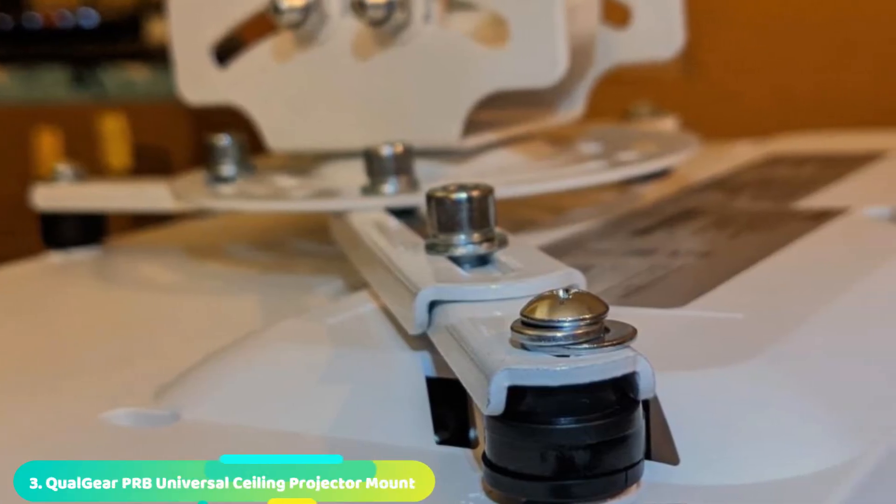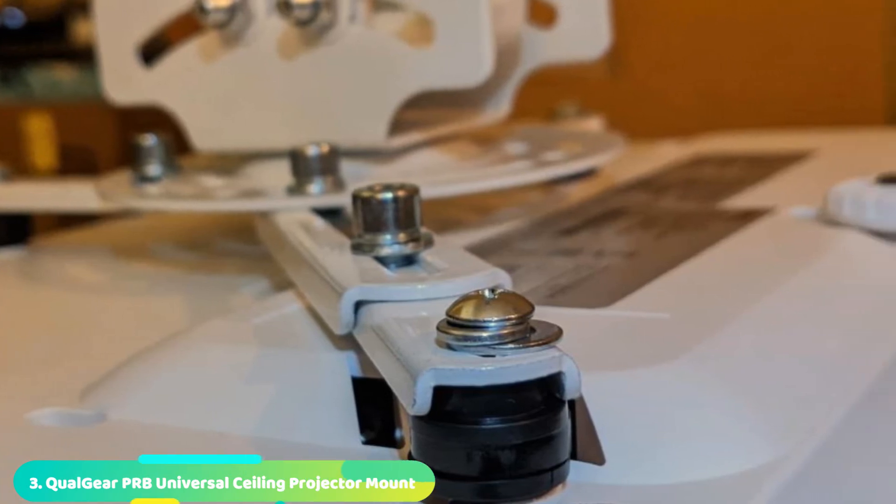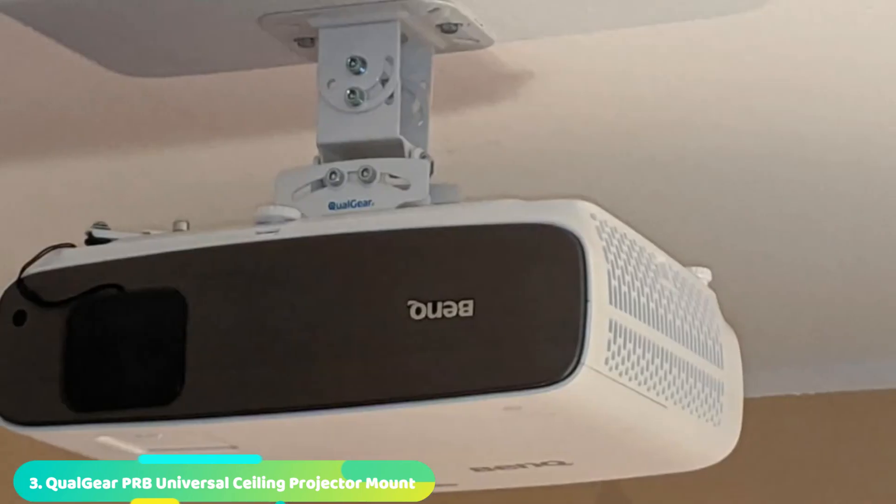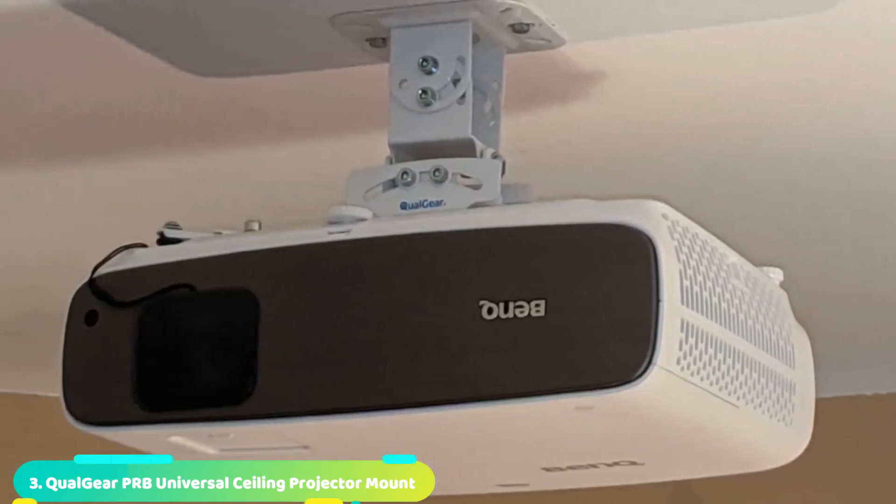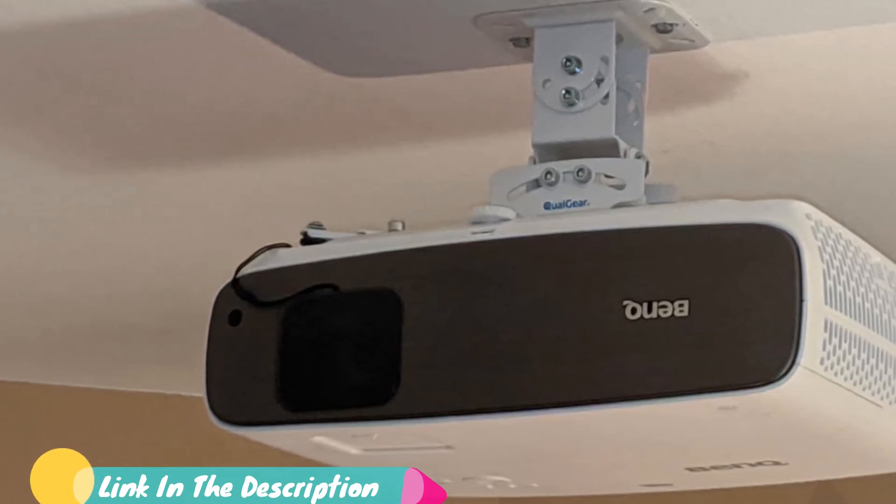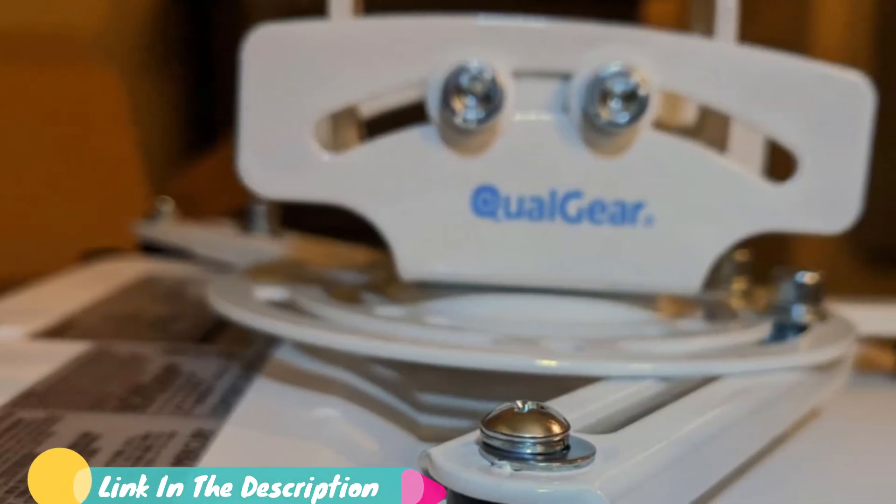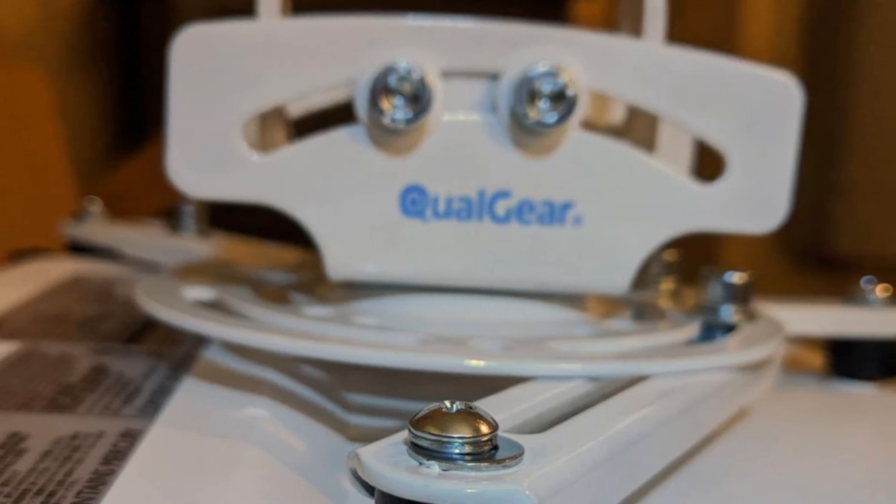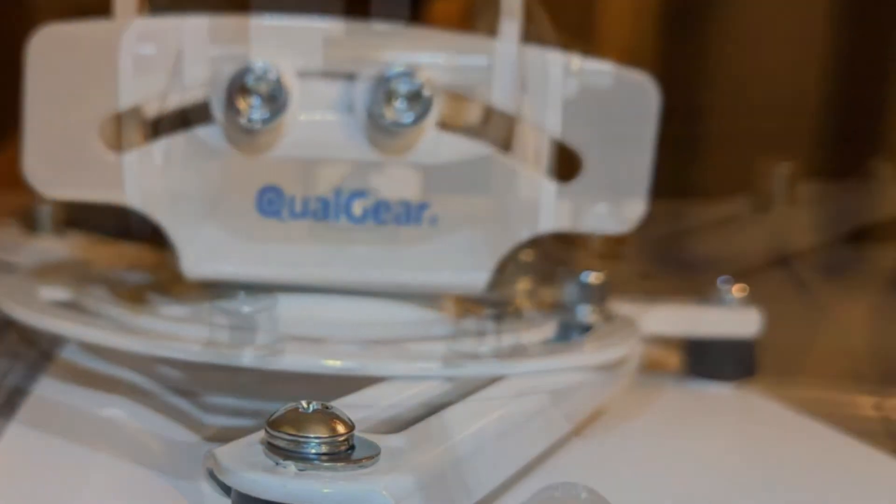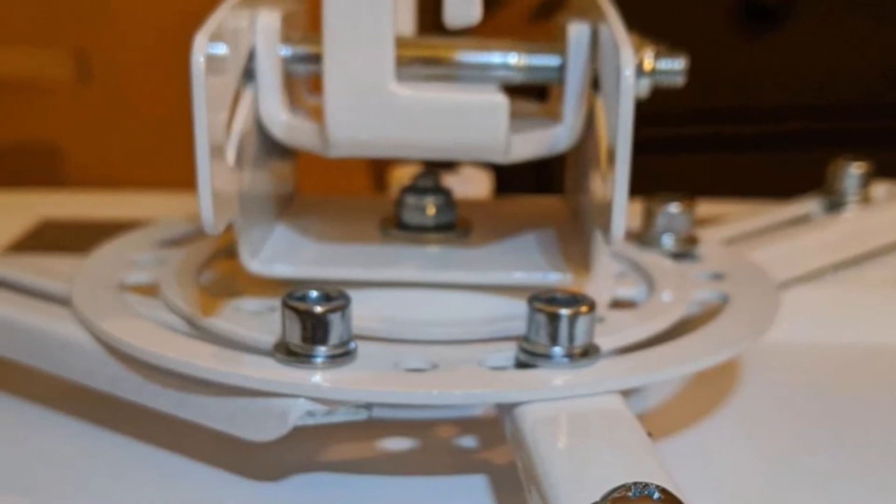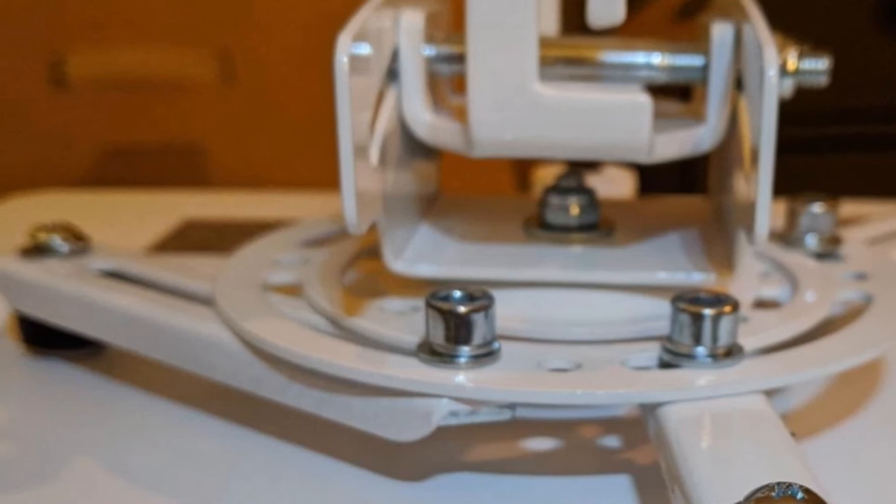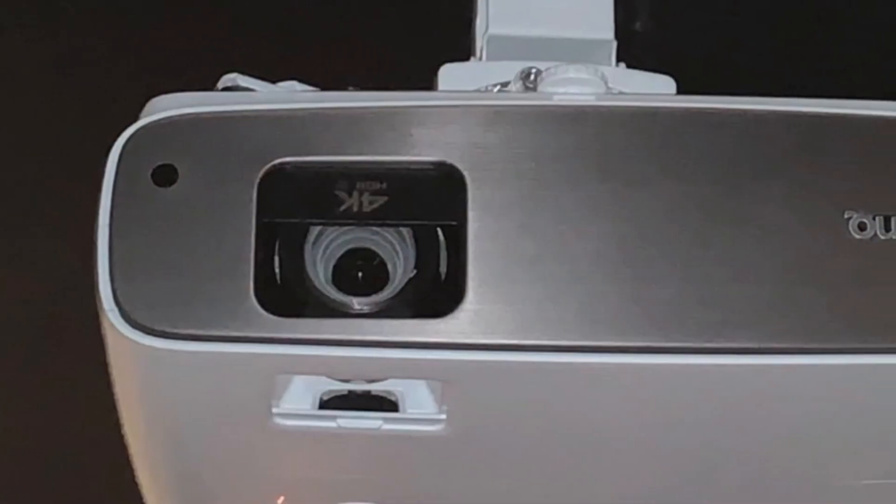The number three position is held by Qualgear PRB Universal Ceiling Projector Mount. Second-in-command, Qualgear comes in with an equally sturdy solution. Made of cold-rolled steel, their PRB mounting kit is extremely adjustable and can hold up to 30 pounds with ease. Mounting is simple, and so is dismounting. Pop it off in one easy motion to move to other bracket systems if you need a better or different angle for presentations.